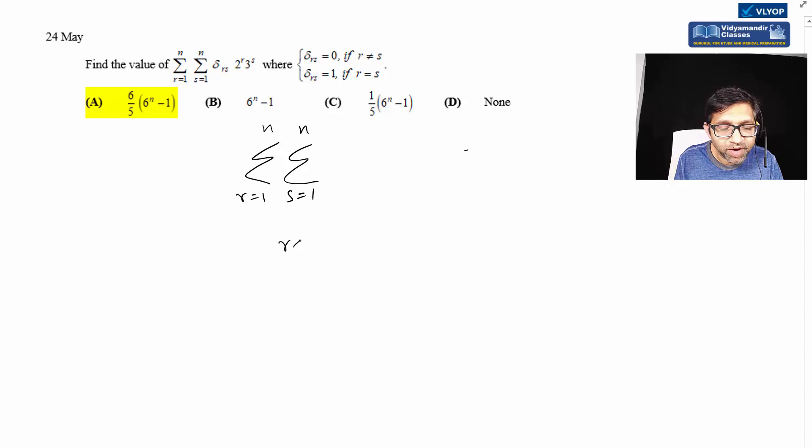This is different from connected sigmas where you might see r equals s or some relationship. Connected sigma is written differently - this is a separate question with disconnected sigma, which is easier. For understanding, let's take delta rs and work through it.